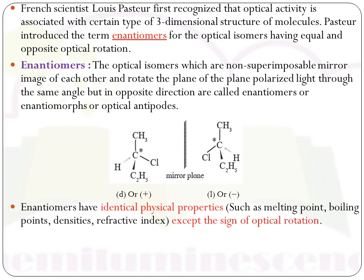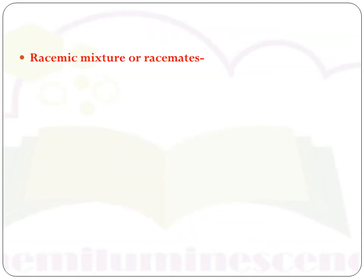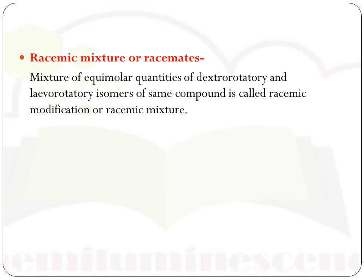Enantiomers have the same physical properties — like melting point, boiling point, refractive index, and density — except for the sign of their optical rotation. They also have the same chemical properties, except towards optically active reagents. Next is the racemic mixture. A racemic mixture is a mixture of equimolar quantities of dextrorotatory and levorotatory isomers of the same compound. It is also called racemic modification.